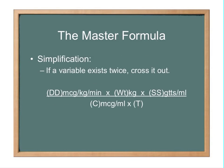So the first thing you're going to do whenever you have anything in this master formula is you're going to want to simplify. For lack of a better term, we're going to call every sort of measurement a variable. So these are all your variables. And whenever you see a variable that exists more than one time in the master formula, you can just cross it out.